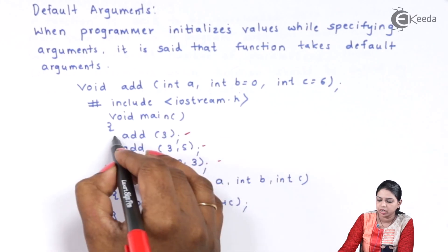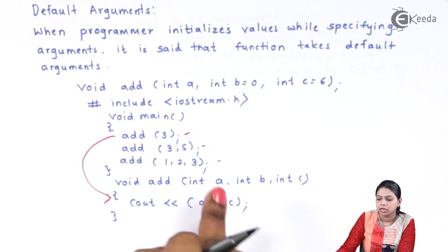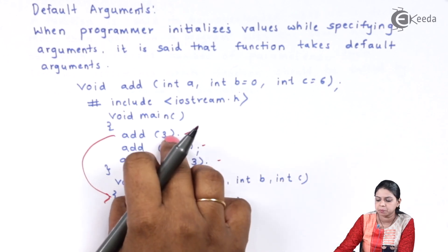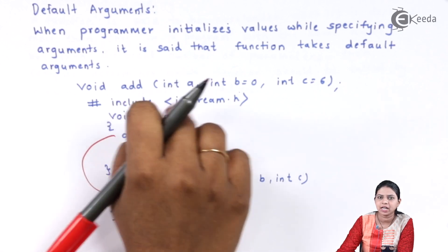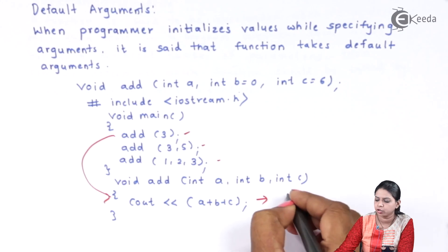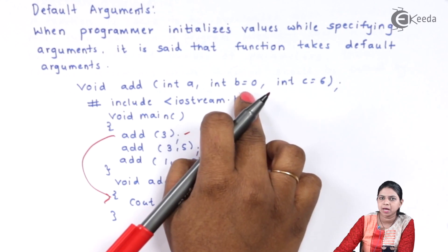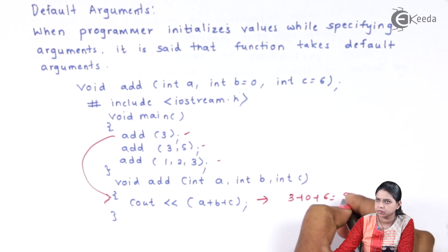When add is called the first time, it will compute a plus b plus c. The value of a is 3, but b and c have not been specified, so they will take their default values. So it is going to be 3 plus 0 plus 6, giving 9.